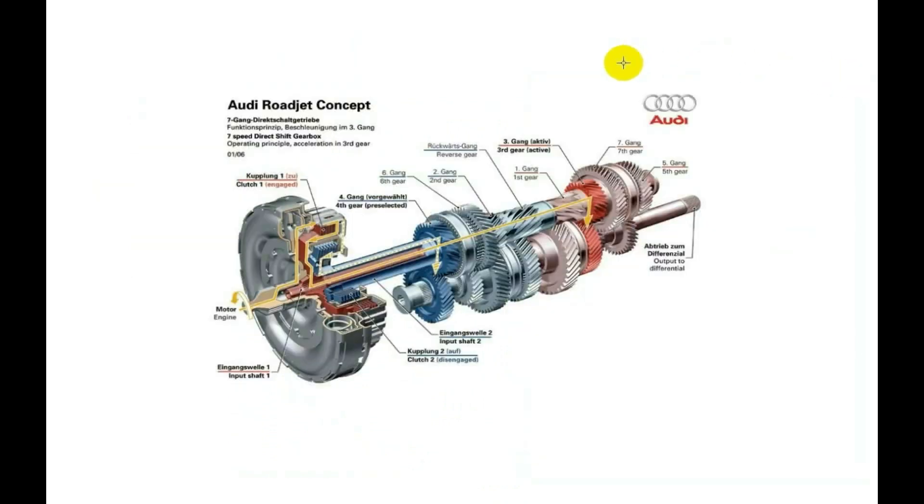And here I have a scheme from the company Audi. This box can also be divided into two parts, as I have already explained. This is the first part, responsible for the odd gears: first, third, fifth, and seventh. It is purple, has its own purple shaft, and ends with a purple clutch.